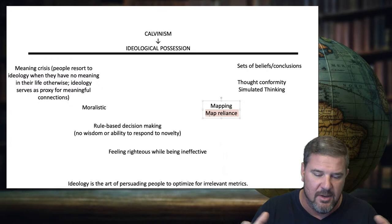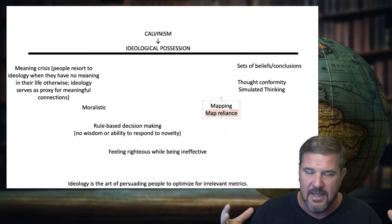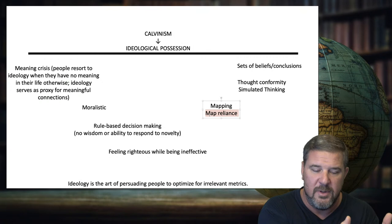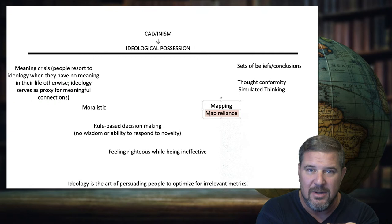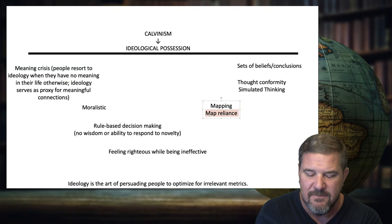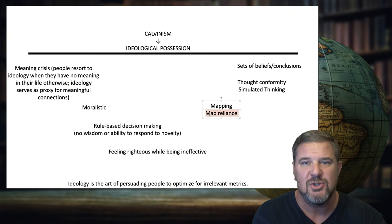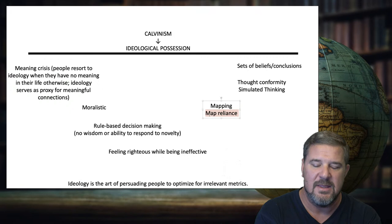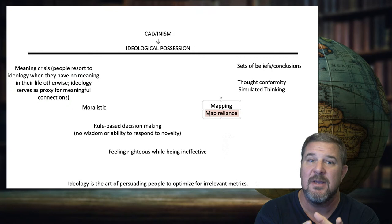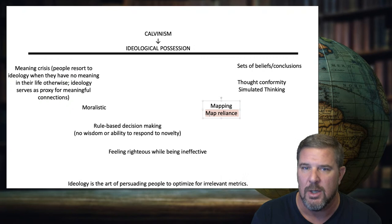Ideologues have map reliance — they cannot update their map with the terrain. They rely on the paradigm, and everything must bow down to it. It's a separate religion nested within Christianity, and the parasite religion is the one they are worshiping — the final authority. Every verse of scripture must be twisted to fit that ideology, and every argument must come out victorious. They're not aiming to find truth — they're aiming to win.